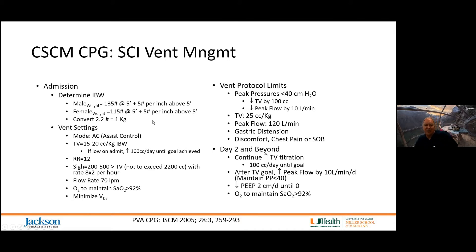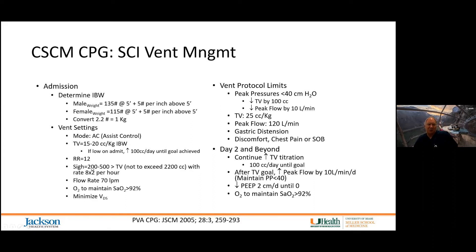If the person has a low tidal volume on admission, increase the tidal volumes by 100 cc per day until you achieve the target goal. You want a respiratory rate of 12, and minimize dead space — tubing can't be too long or you're not moving fresh air into the lungs.